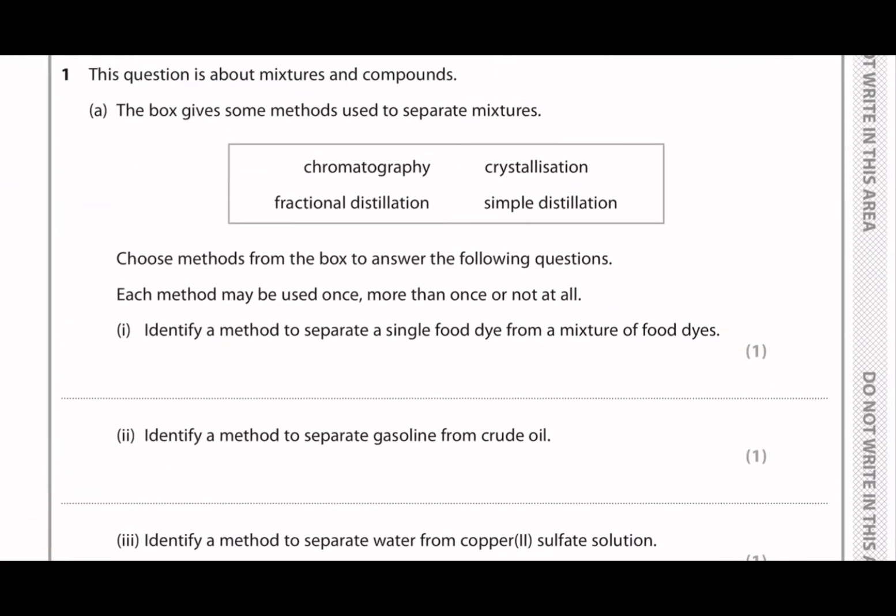This question is about mixtures and compounds. They have given us four methods used to separate mixtures, and our job is to match this method with one of the prompts below. The first prompt is to identify a method to separate a single food dye from a mixture of food dyes. So the answer is chromatography.